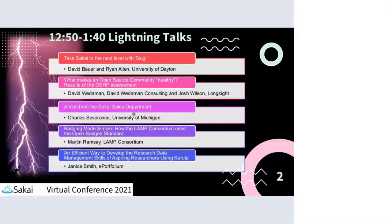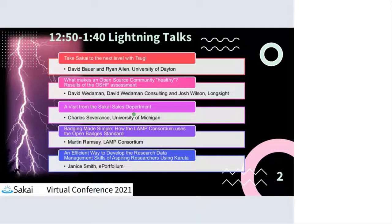Janice attempts to share her screen but is using a different browser instead of Chrome. Wilma is asked to run the slides instead, but the link requires access permission. Janice changes the sharing settings to anyone with the link, and Wilma is then able to proceed.